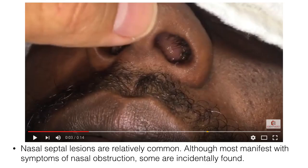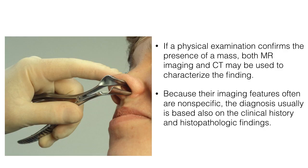These are the actual pictures of the patient that we had. Nasal septum lesions are relatively common. Although most manifest with symptoms of nasal obstruction, like our patient, some are incidentally found. If a physical examination confirms the presence of a mass, both MR imaging (magnetic resonance imaging) and CT (computed tomography) may be used to characterize the finding. But because their imaging features are often nonspecific, the diagnosis is usually going to be based on clinical history and histopathologic findings — you need a good history and a biopsy or sample of the lesion. CT scans and MRIs, although helpful, are not going to be diagnostic.